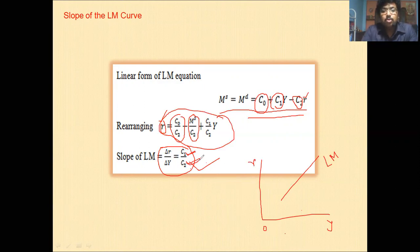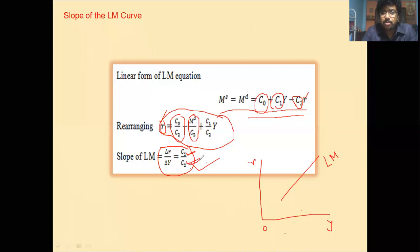To summarize: the slope of the IS curve is the ratio between the marginal propensity to save and the sensitivity of investment to the interest rate — it is a downward sloping curve. The slope of the LM curve is the ratio between the sensitivity of money demand to income and the sensitivity of money demand to the interest rate. I hope you understood how these slopes are determined using the mathematical procedure.